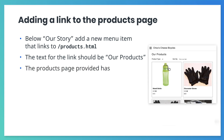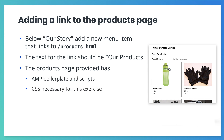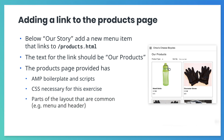The products page we have provided includes the AMP boilerplate code. It's also going to include CSS and AMP component scripts you'll need to complete the exercise, parts of the layout that are common between the product and index pages like the header and slide-out menu, and an AMP state and select inputs that allow users to pick different product categories or sorting options. The included select options already have the values the server expects for it to function appropriately.